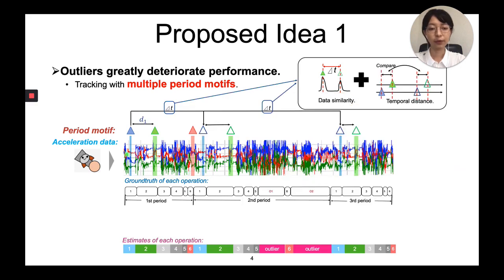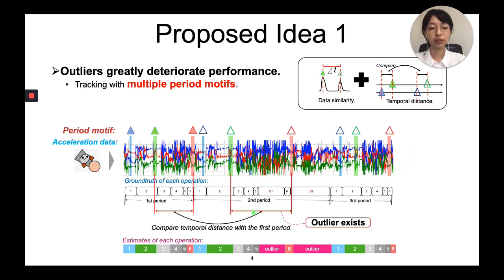As for other motifs, since they are not as confident as the best one, in addition to data similarity, the relative distance to the best motif is also compared. Their temporal distance should be consistent in different periods. And by this way, we can easily determine if outlier exists in an area by comparing temporal distance with different periods.